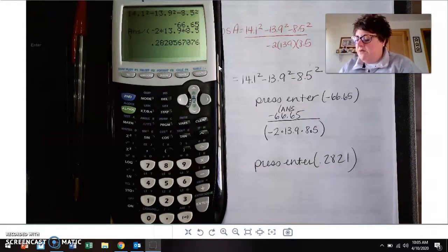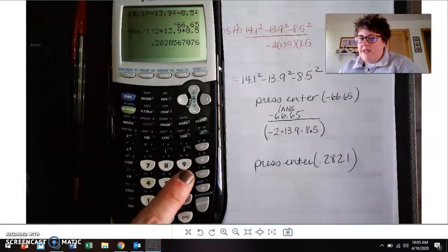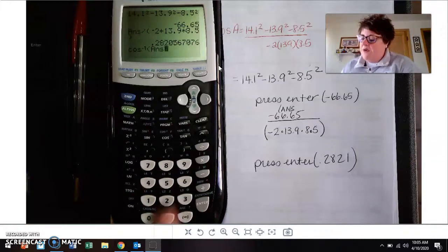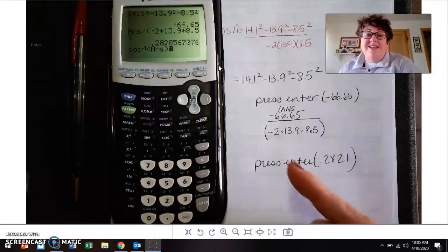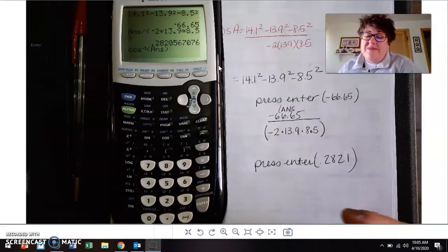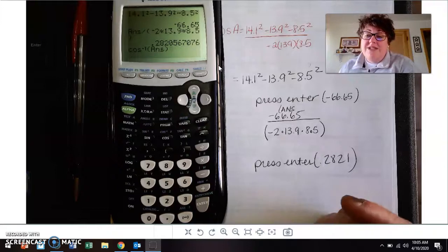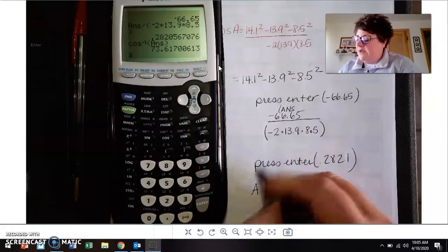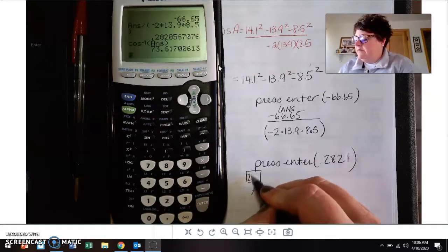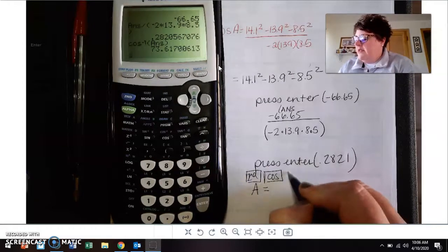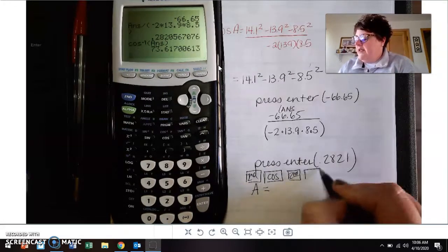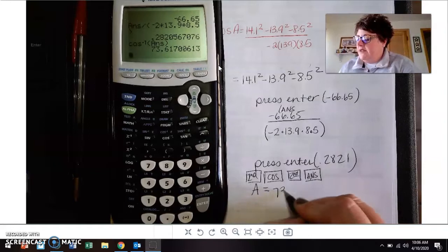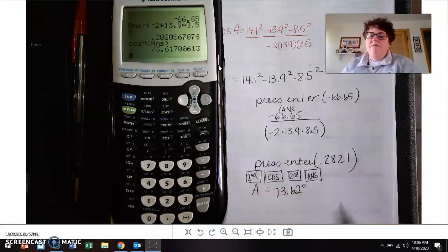So to take the inverse cosine, you want to take second and then cosine, and then second and then answer. What that allows you to do is it takes the previous answer above it, again with all of those digits, so your answer is so much more closer to accurate. You should get angle A to be, so inverse, so second, cosine, and then second and then answer, or it's your negative sign. You should get A to be 73.62 degrees.